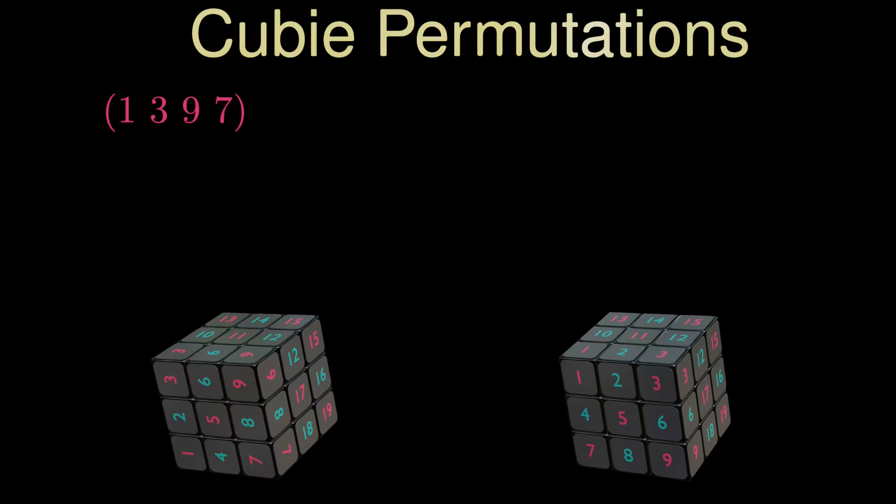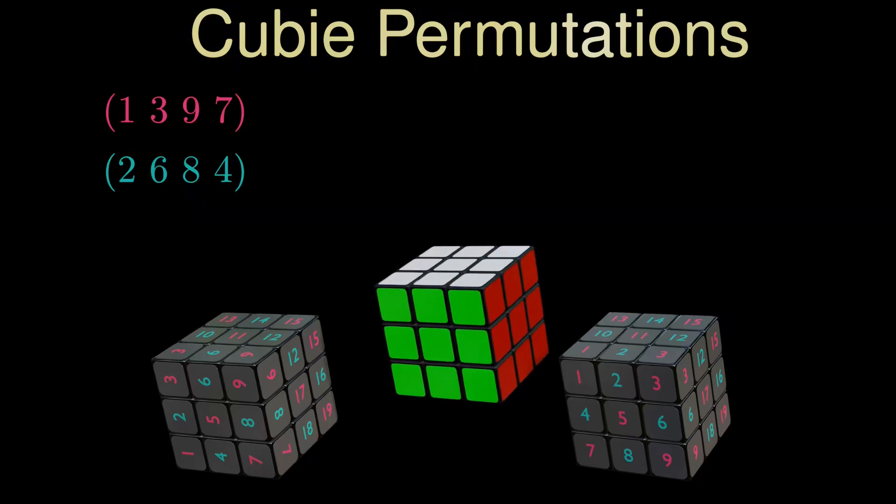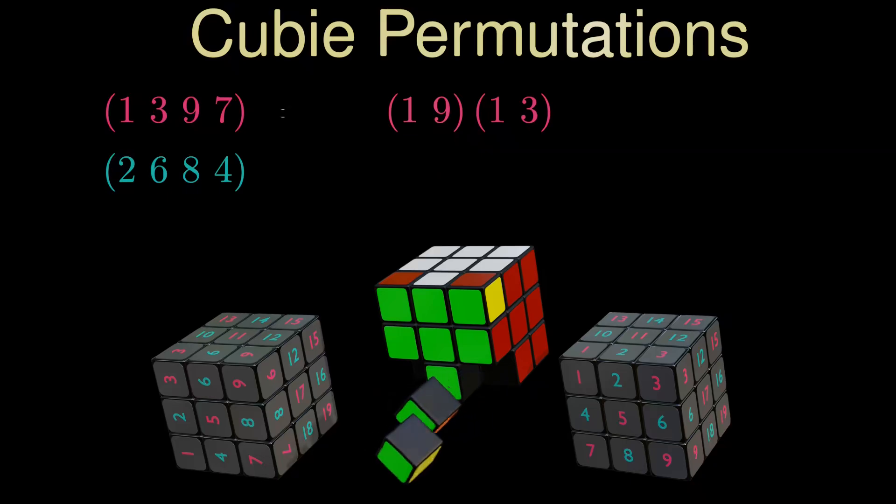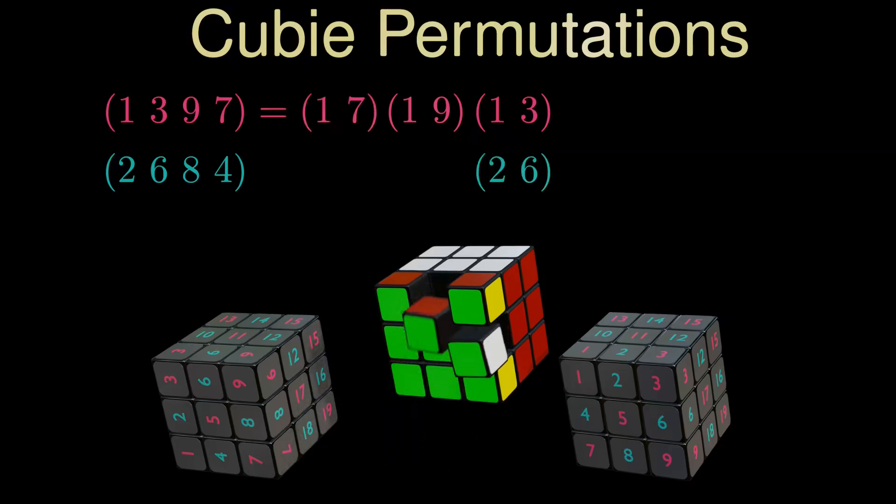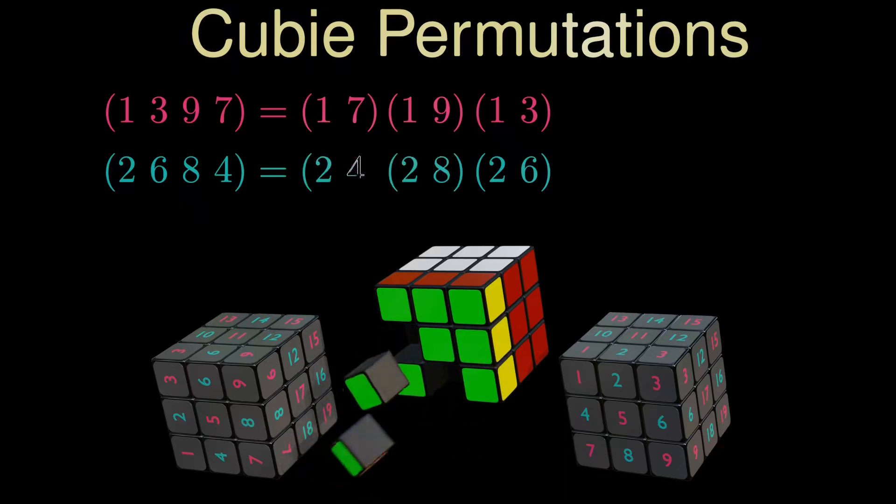Similarly, the permutation of the edge cubies can also be expressed in a cycle. Instead of a cycle, we can break the permutation down into swaps, so-called transpositions. The four-cycle of the corner pieces can be replaced by three consecutive transpositions written from right to left. First swap cubie 1 and cubie 3, then swap cubie 1 with cubie 9, and finally swap cubie 1 with cubie 7. It is easy to see that every four-cycle is broken down into at least three transpositions.